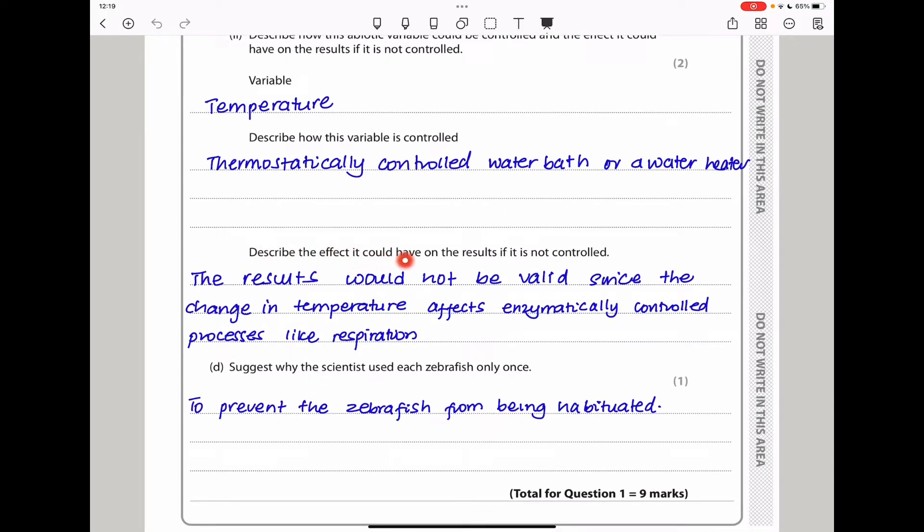If the temperature was not controlled, the results will not be valid because temperature changes affect how enzymes perform. These are enzymatically controlled processes. If the temperature is changed, there is going to be an effect on how these enzymes work. Swimming requires energy from respiration, and respiration is carried out by enzymes working in the organism. If the temperature is varied, respiration is going to be affected and the amount of energy generated is going to be affected, therefore the process of swimming is also going to be affected.